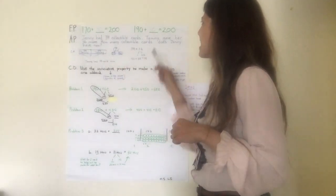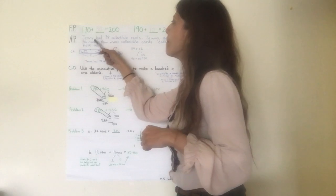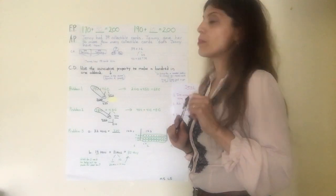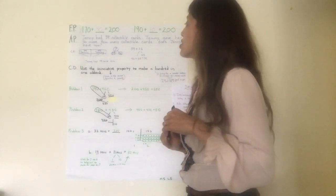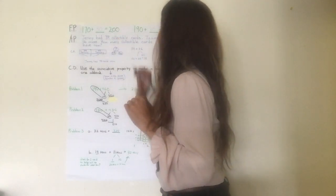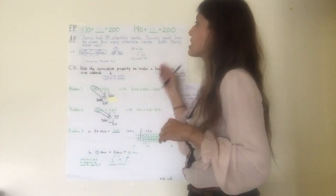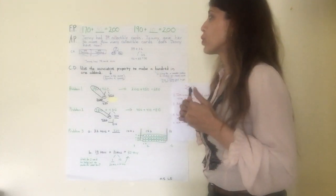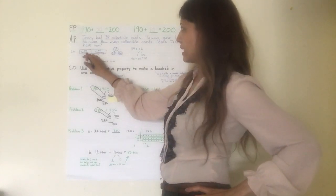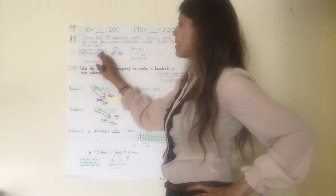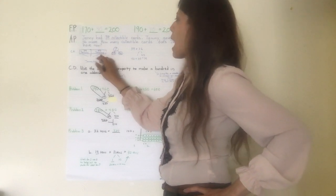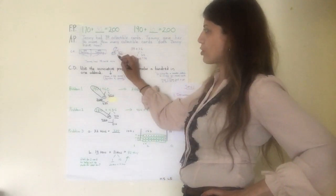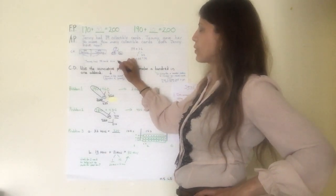Jenny had 39 collectible cards. Tommy gave her 36 more. How many collectible cards does Jenny have now? Remember: read, draw, write. So rereading — Jenny had 39 collectible cards, Tommy gave her 36 more. How many does she have now? I am going to conceptually represent this — first using a tape diagram, then a number box.